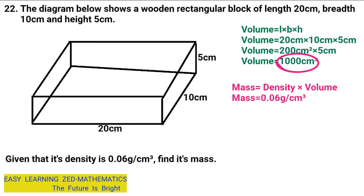When we multiply 0.06 grams per centimeter cubed by 1,000 centimeters cubed, we get 60 grams. So the mass of this wooden block is 60 grams.